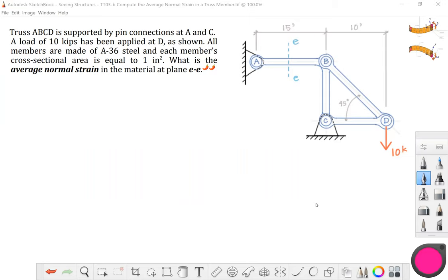Okay, let's do a little truss problem. We've got a truss ABCD. It is supported by pin connections at A and C.